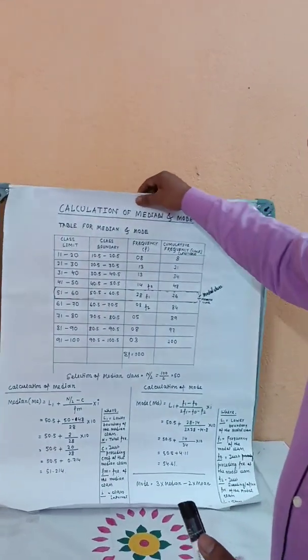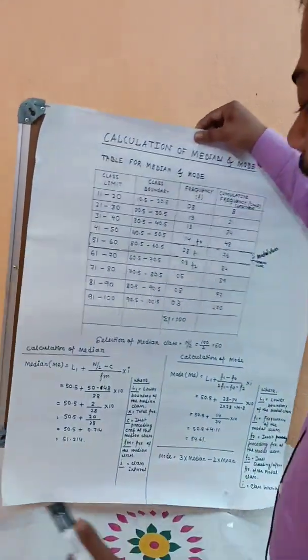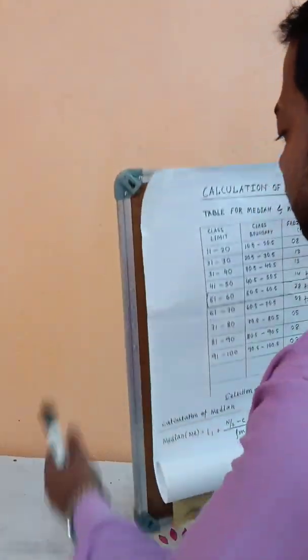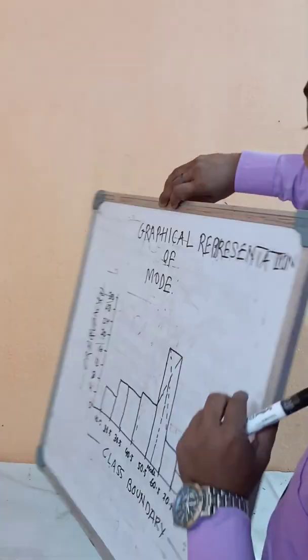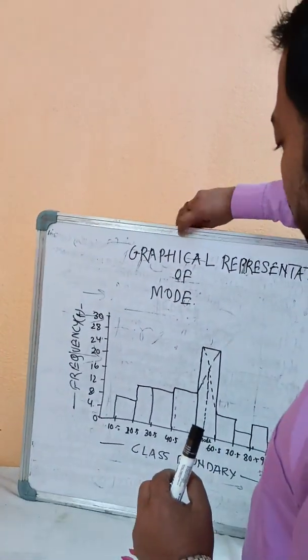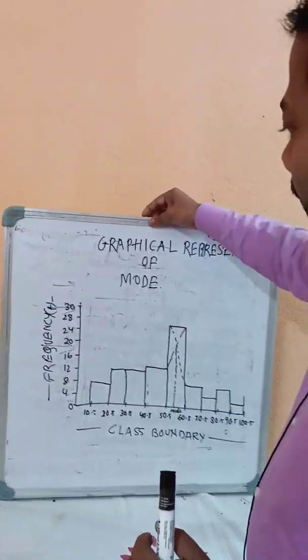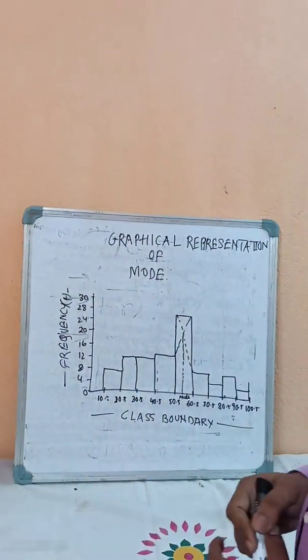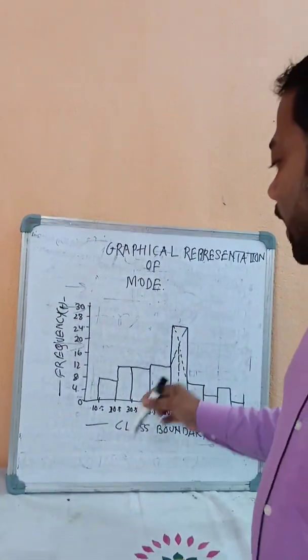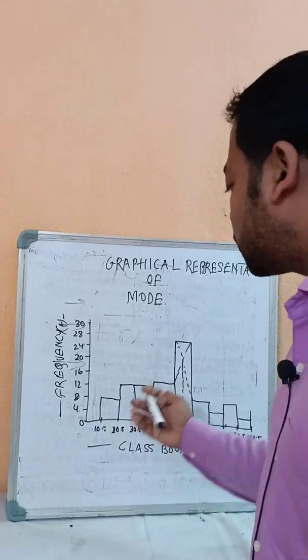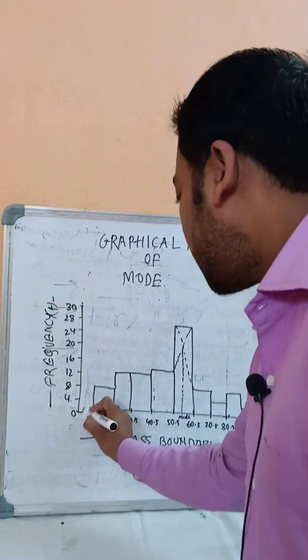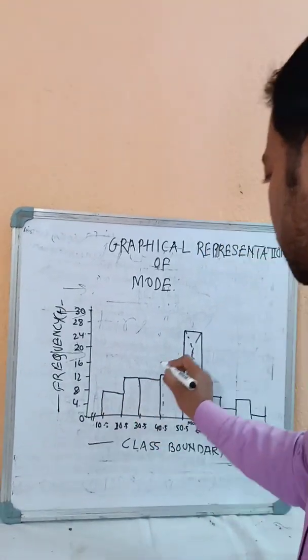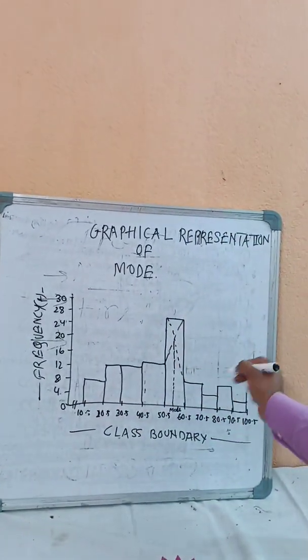This is the graphical presentation of the mode. The graphical representation uses a histogram, which is drawn separately.